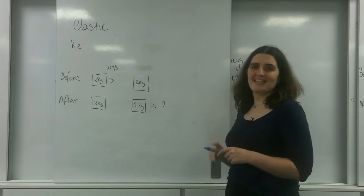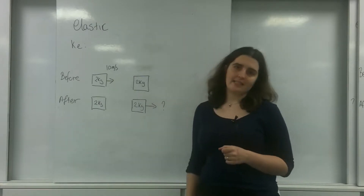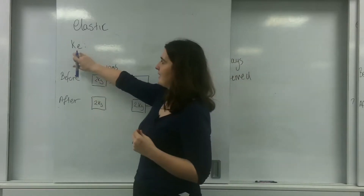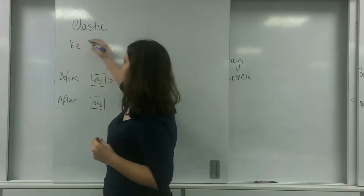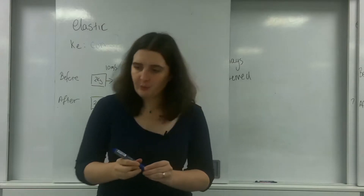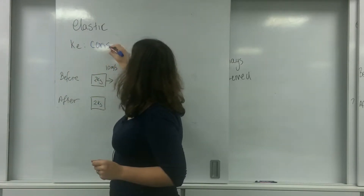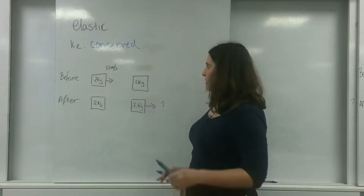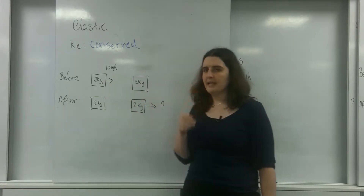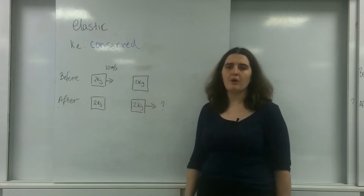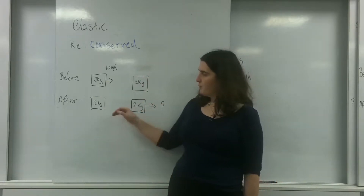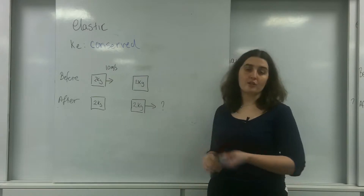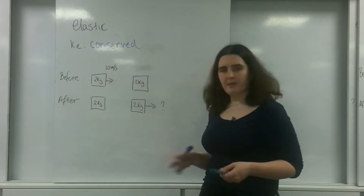First, I'm going to talk about elastic collisions. The important thing about an elastic collision is that not only is momentum conserved, but so is kinetic energy — written here as KE, which is also conserved. So I've got a 2kg block moving at 10 metres per second and it's going to hit another 2kg block that is not moving. Afterwards, the block I threw stops and the second 2kg block moves onwards, much like on a snooker table.